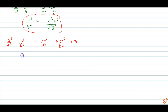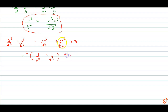Taking x-square common from the x terms: x-square into (1 upon small a-square minus 1 upon capital A-square). Then taking minus y-square common from the y terms: minus y-square into (1 upon small b-square plus 1 upon capital B-square).